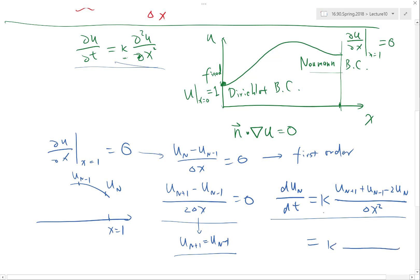As a result, what I get is du_n/dt is equal to 2 times u_{n-1} minus 2 times u_n divided by delta x squared. Right? Does it make sense?